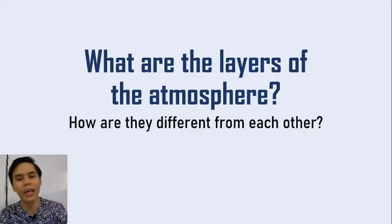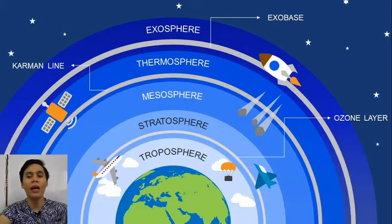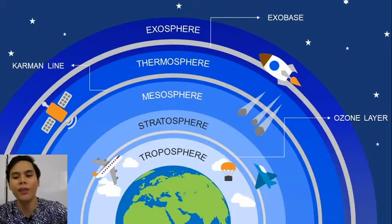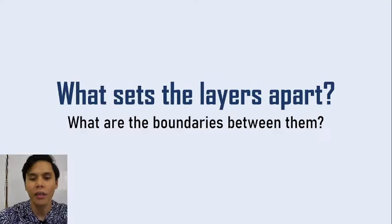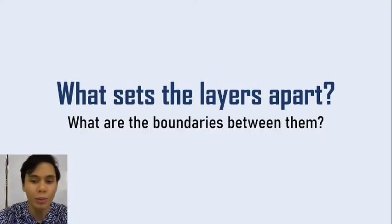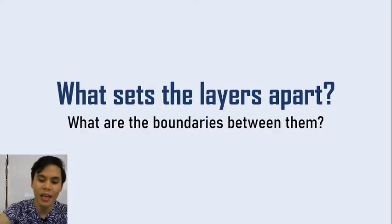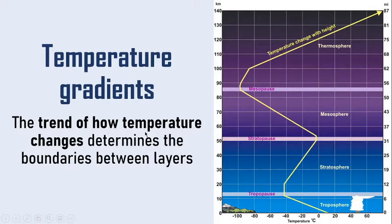What are the layers of the atmosphere? How are they different from each other? These are the different layers of the atmosphere and we'll go through them one by one. What sets the layers apart — what are the boundaries between these layers? We have the temperature gradients, which are the trends of how temperature changes between the layers.